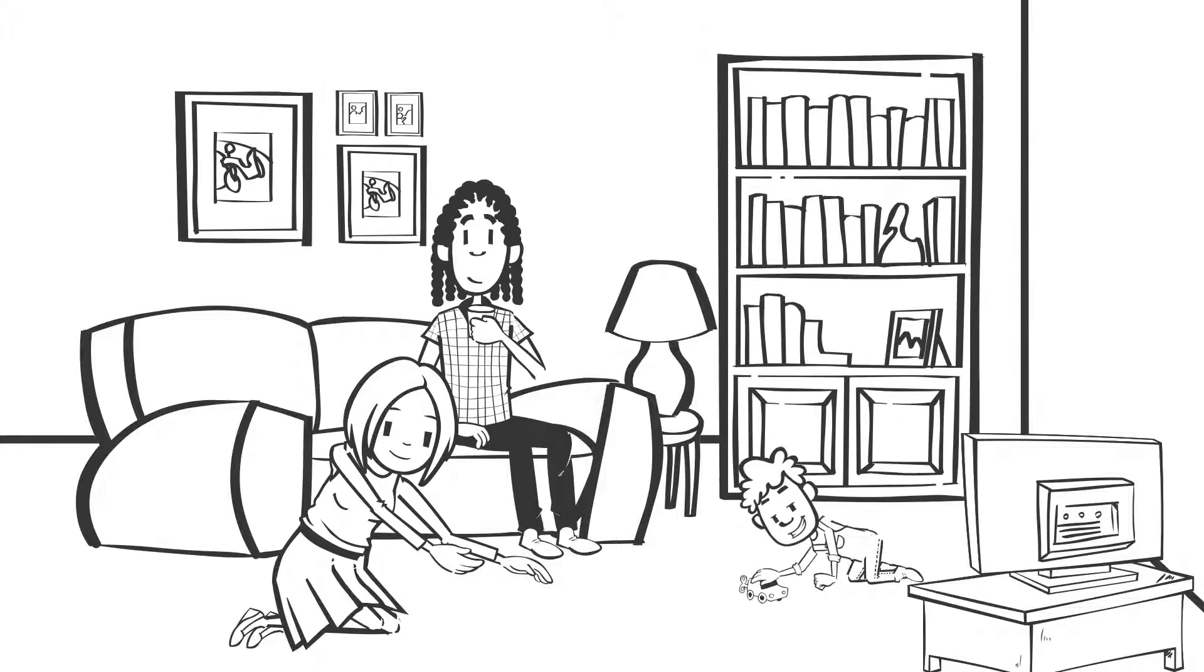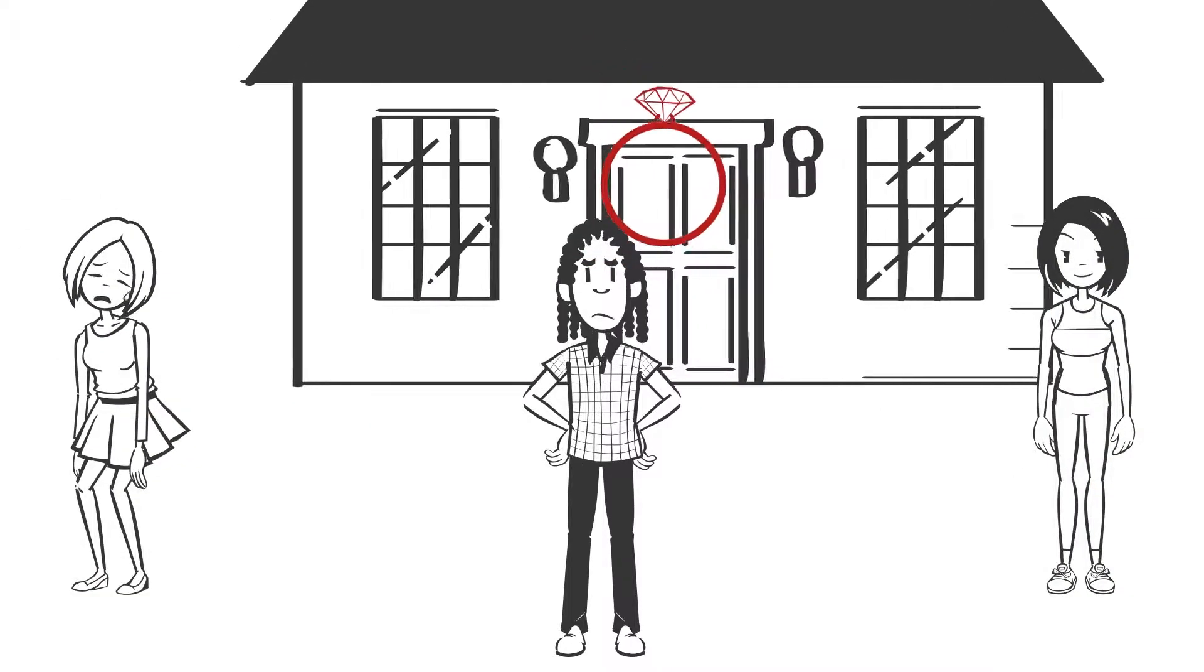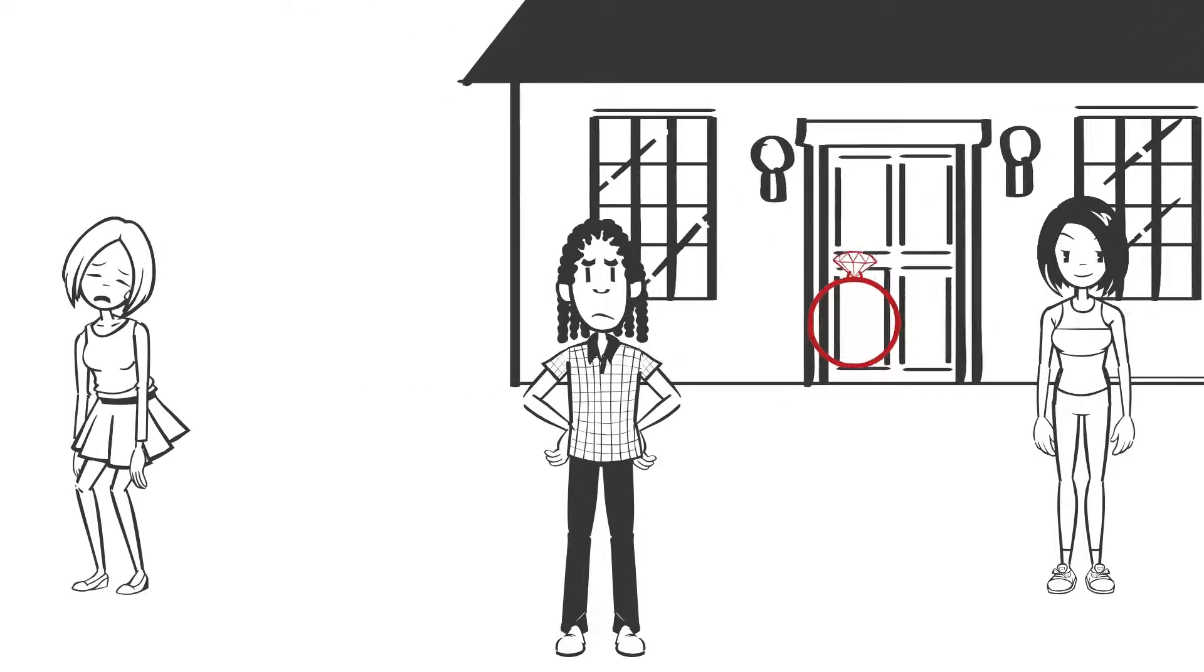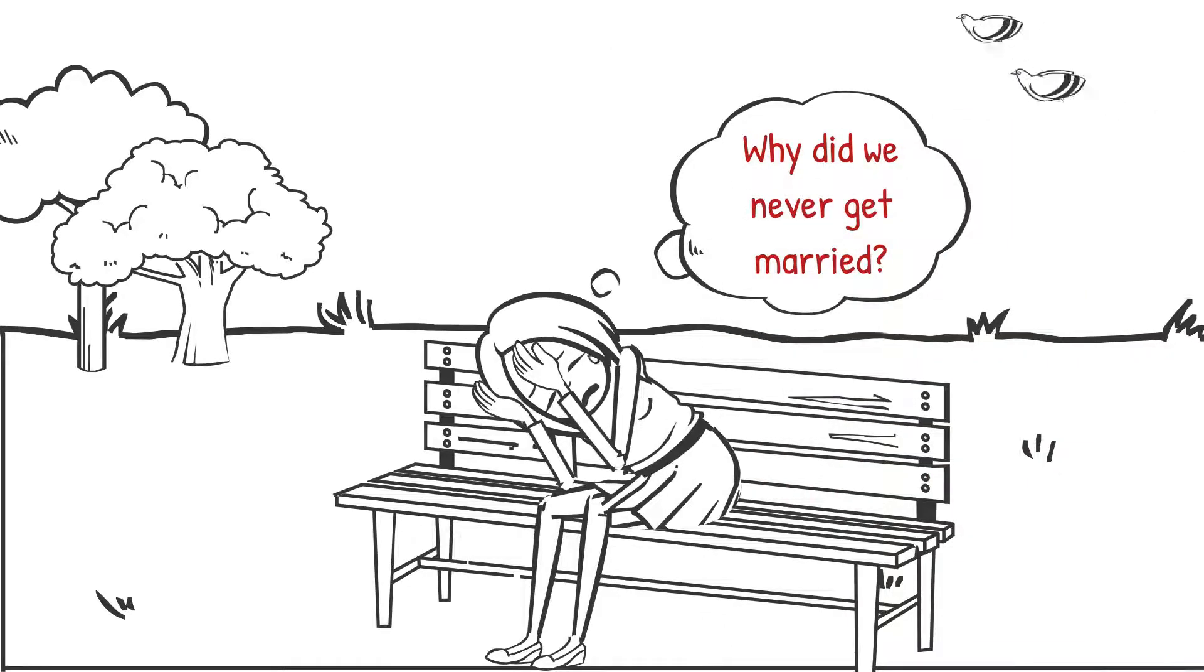Alan and Barbara lived together but were not married. When Alan died, Grace inherited part of his estate under the intestacy rules because although she and Alan were no longer together, she was still legally married to him. Barbara inherited nothing because she and Alan were never married.